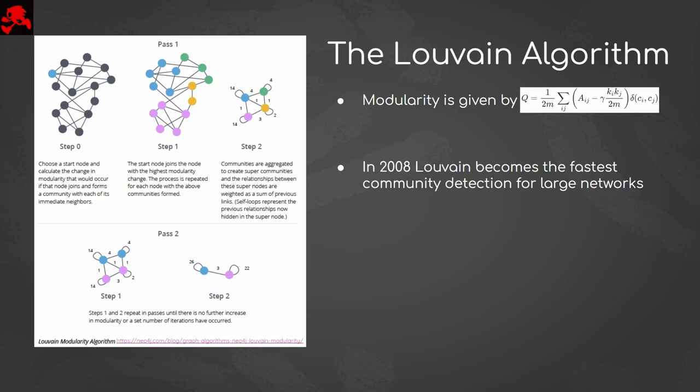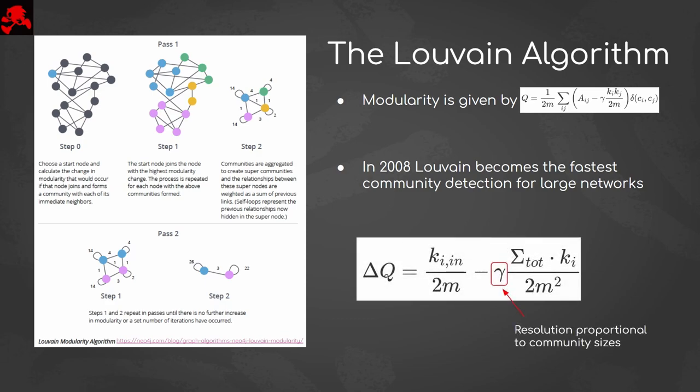The Louvain algorithm was created because the networks they were considering, like Facebook, Google, and the internet, were too large to play with in the period software. While the yeast network we are considering is orders of magnitude smaller, Louvain remains the most appropriate choice due to a scalar known as resolution. Simply seeding a lower value for resolution into the formula for modularity causes Louvain to produce communities appropriate to the size of the yeast PPI network.